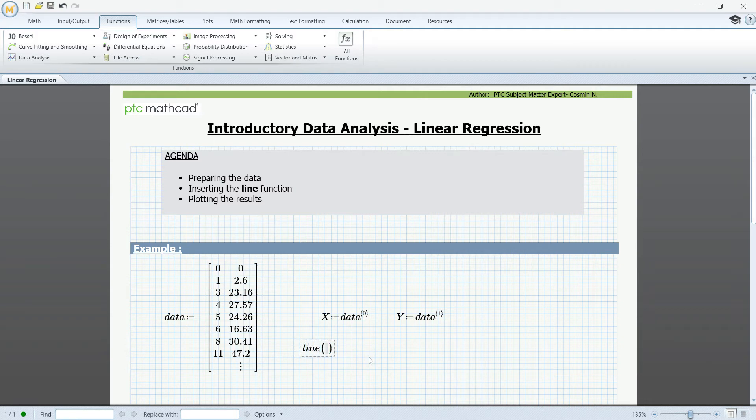Now that we have inserted the function in the worksheet, we need to provide some arguments to the function. The line function takes in two arguments, that in this case will be the two vectors that I have created previously. So let's go ahead and enter the two variable names in here.